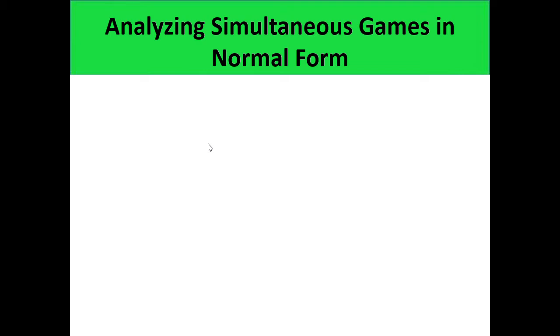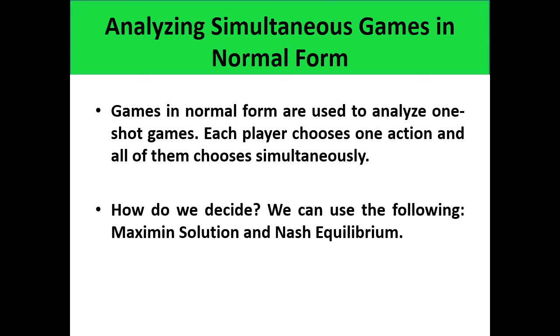Let's continue our discussion on game theory. In the previous video we discussed how to construct the normal form of the game. In this video we will analyze simultaneous games based on the normal form. We want to get the best strategy of each player, and the best strategy is dependent on various perspectives: the maximin solution and the Nash equilibrium.